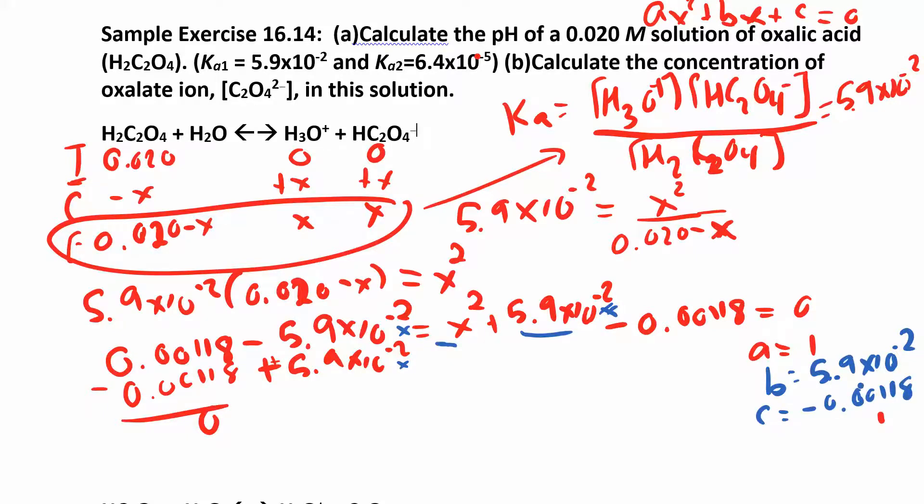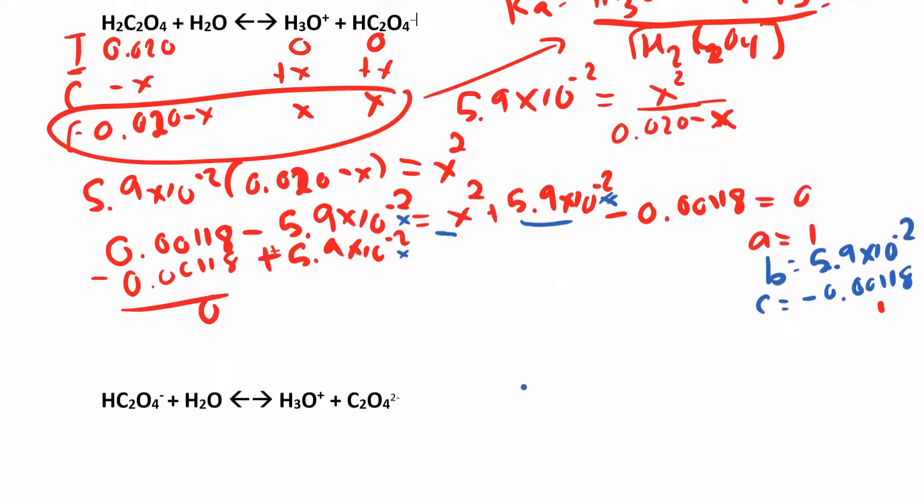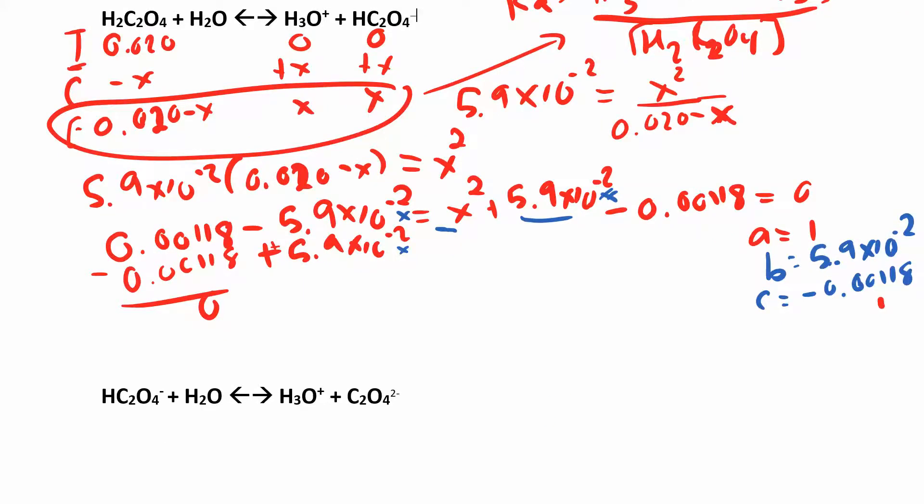Now you can plug that into the quadratic equation, which looks like negative b plus or minus square root of b squared minus 4ac all over 2a.